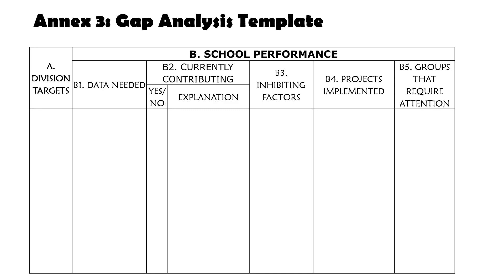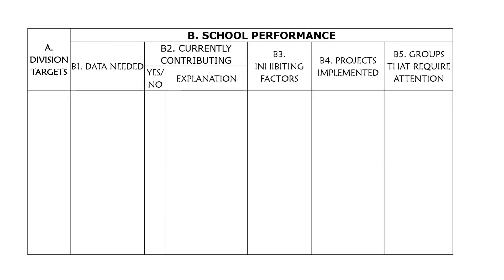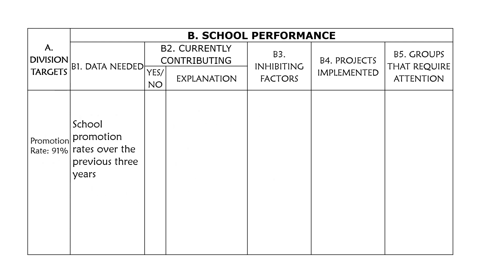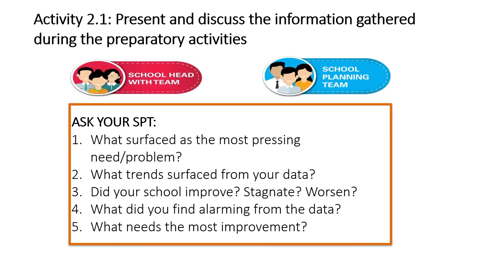Here we have division targets, data needed, currently contributing — yes or no — what are the inhibiting factors, what are the reasons behind why we are not contributing, or are we an inhibiting factor? Then you try to look at the projects implemented and the groups that require attention. For example, the division target is 0.1 dropout rate. You try to fill that up in order to identify what things you need to do to really contribute. This is an example — you may pause the video if you like in order to see it.